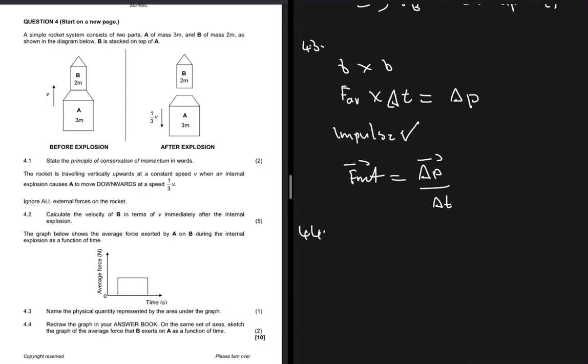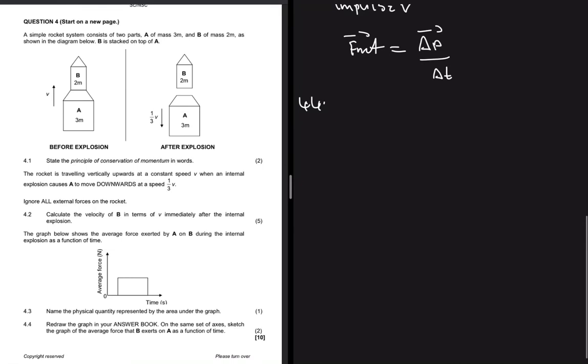Let me just put in an axis. This is our y-axis, this is our x-axis. We have force average and time in seconds. That's F_A on B. The question says find F_B on A.